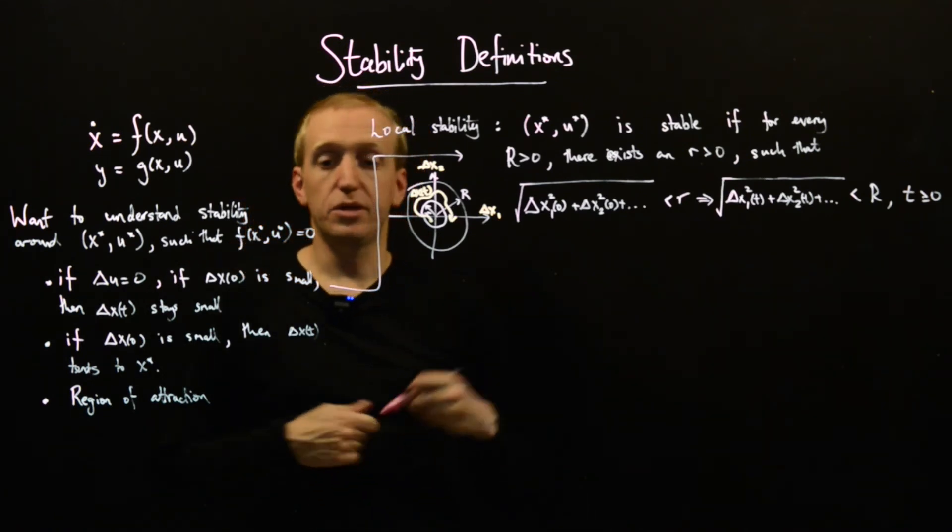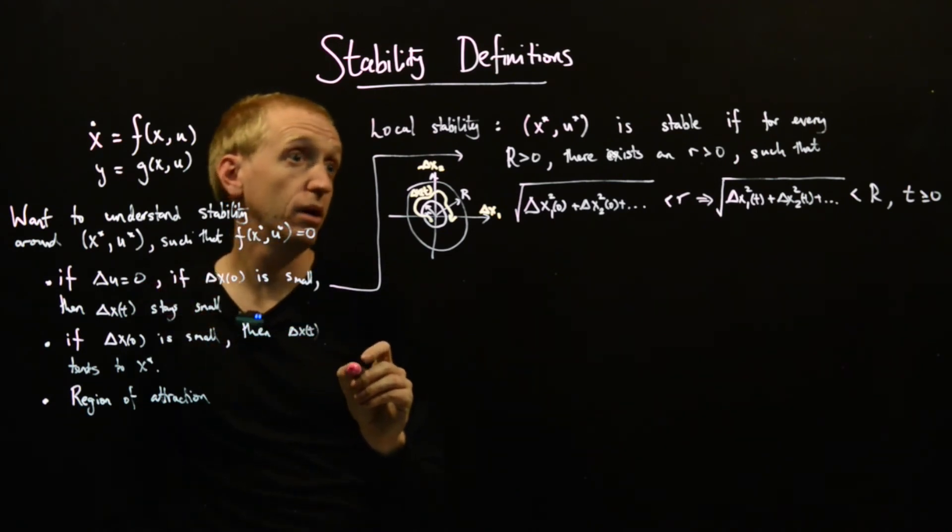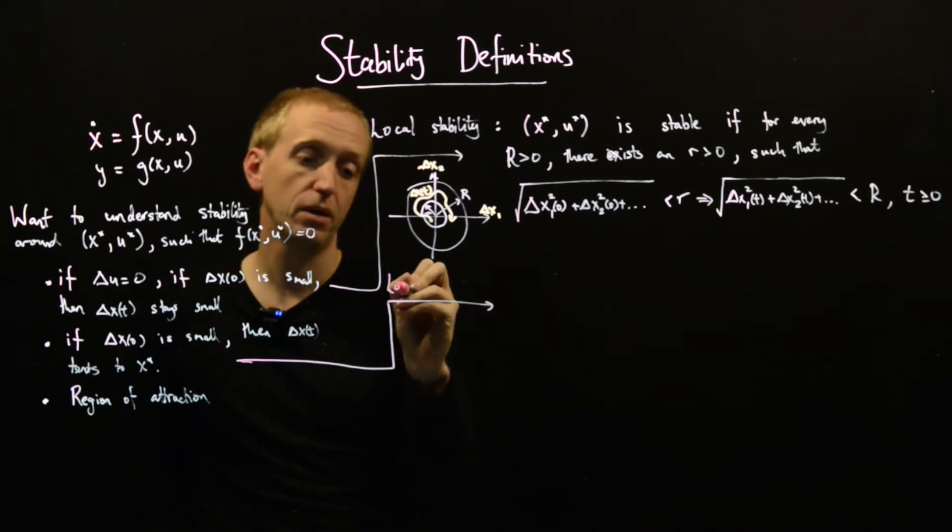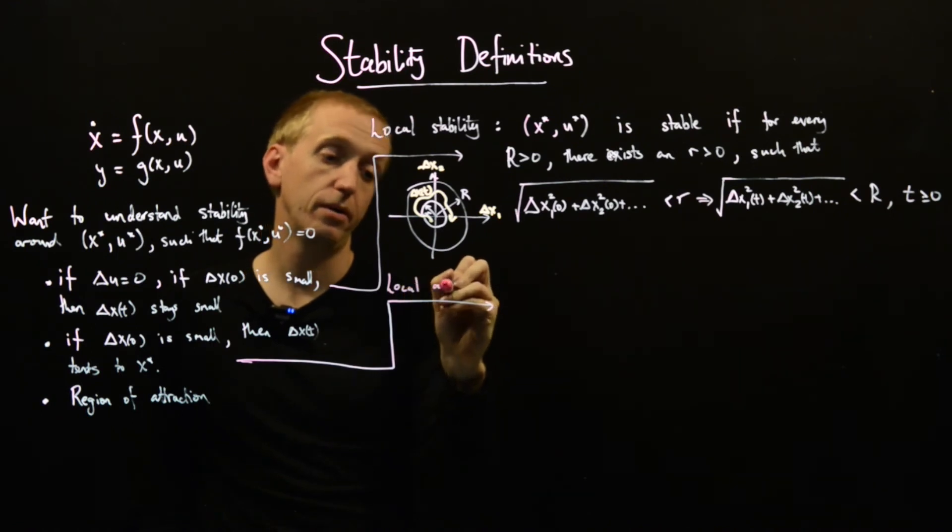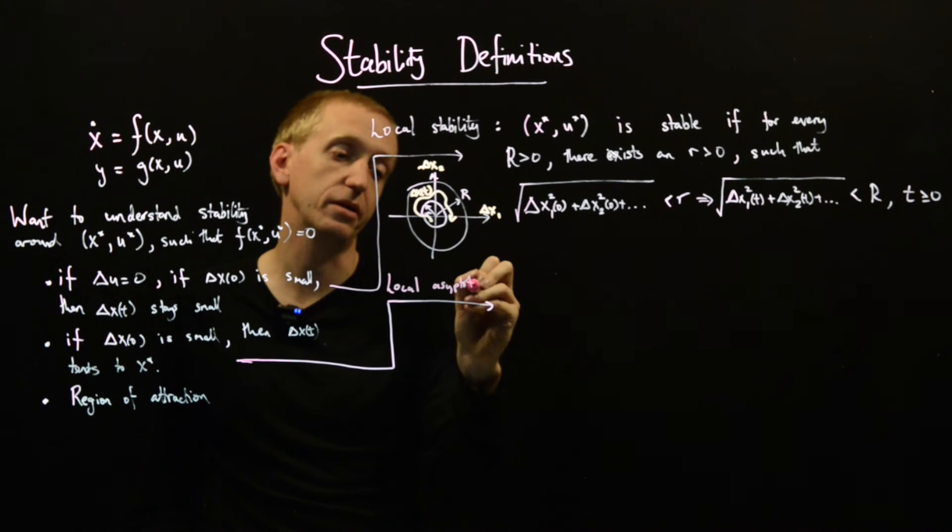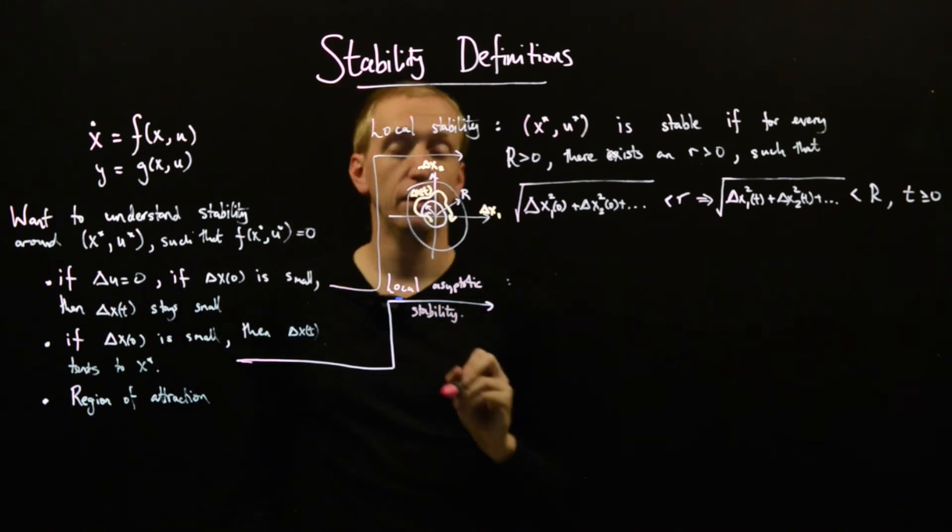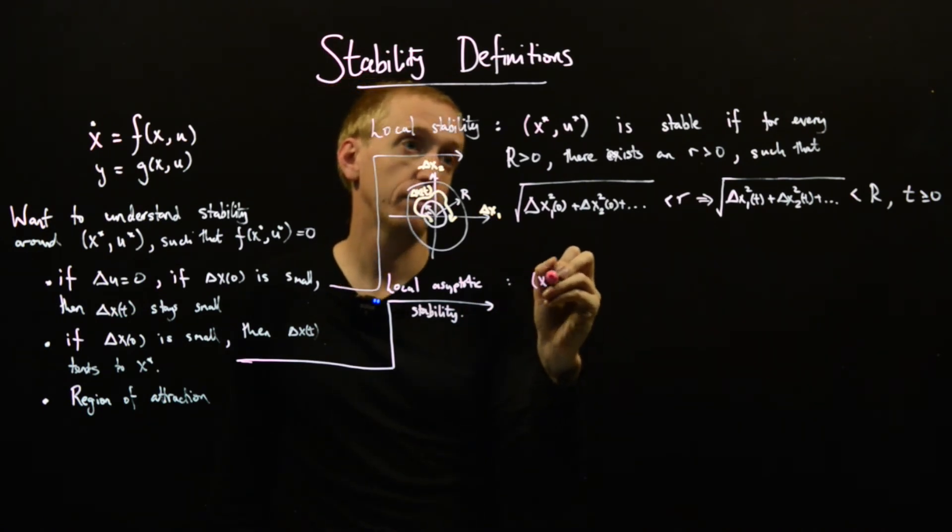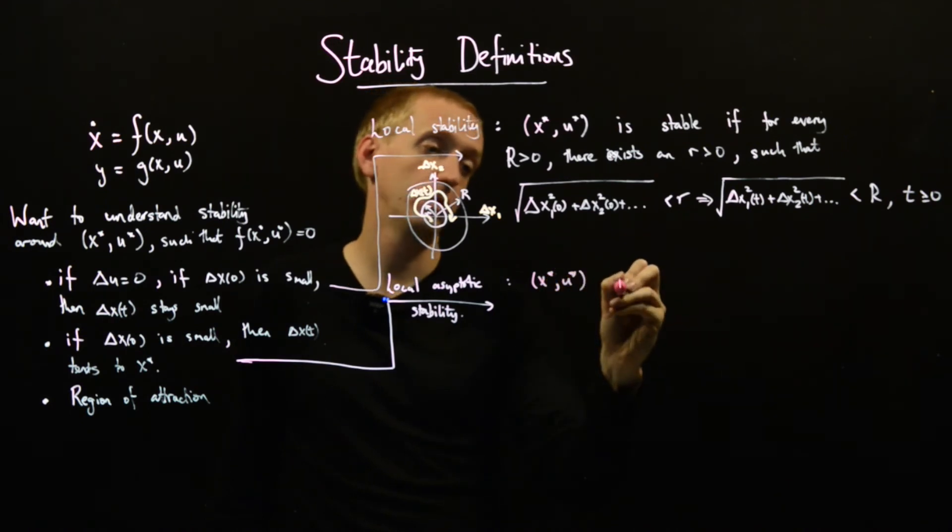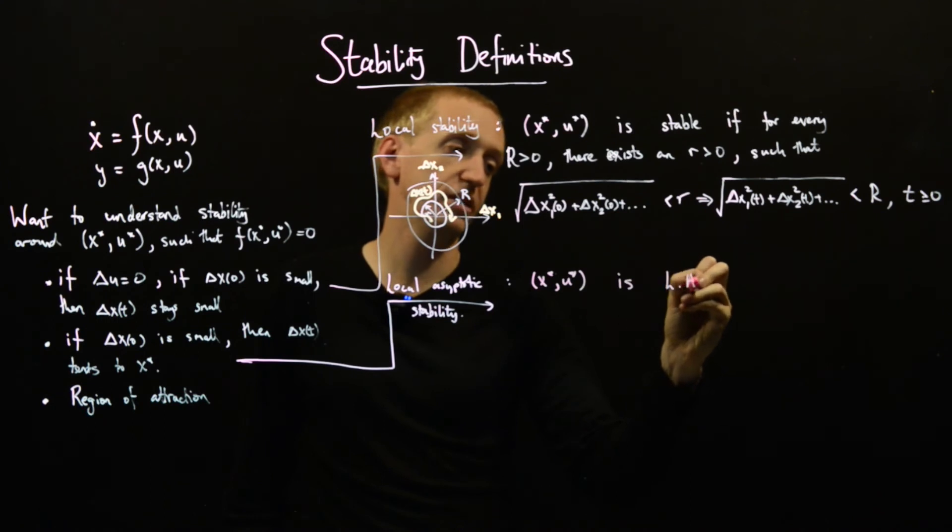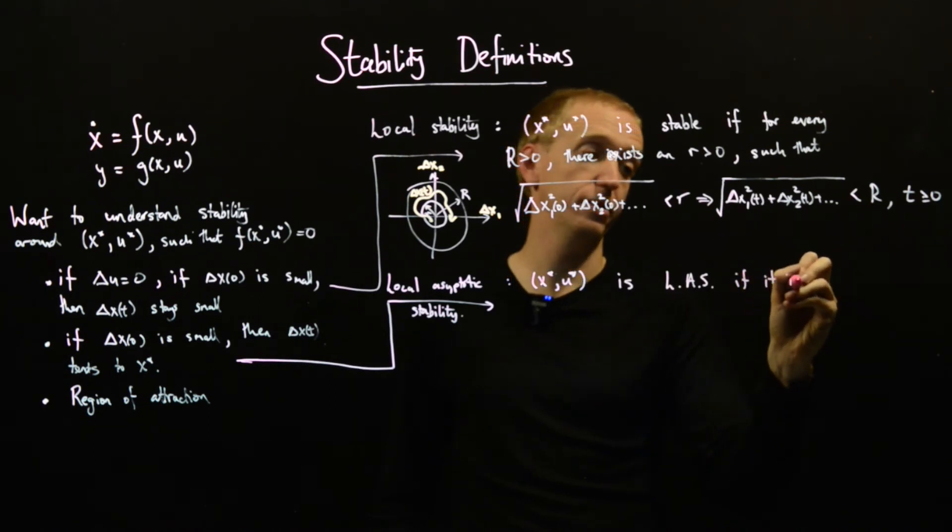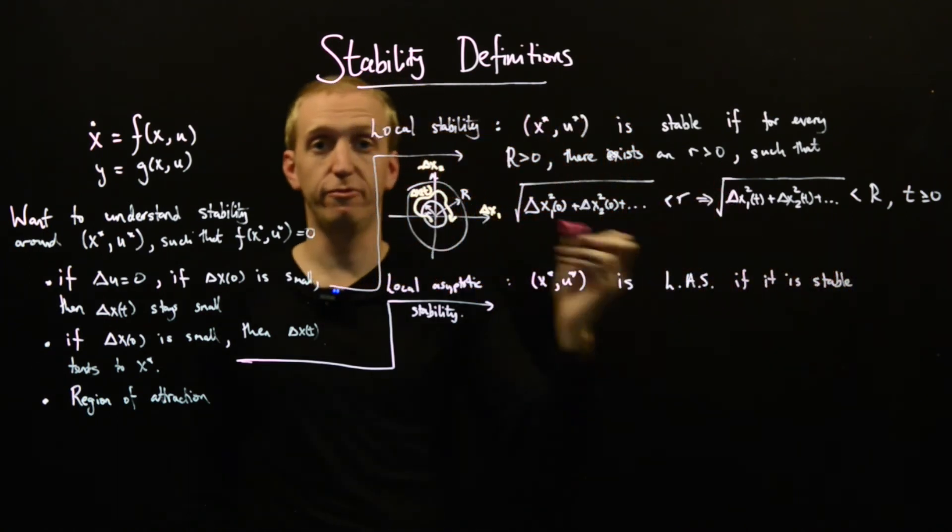Our second idea is normally turned into a definition called local asymptotic stability. And this is a slight strengthening of the definition of local stability, so we say that x star u star is, and it's often abbreviated LAS for locally asymptotically stable, if it is stable. If it is stable, so first of all, it holds.